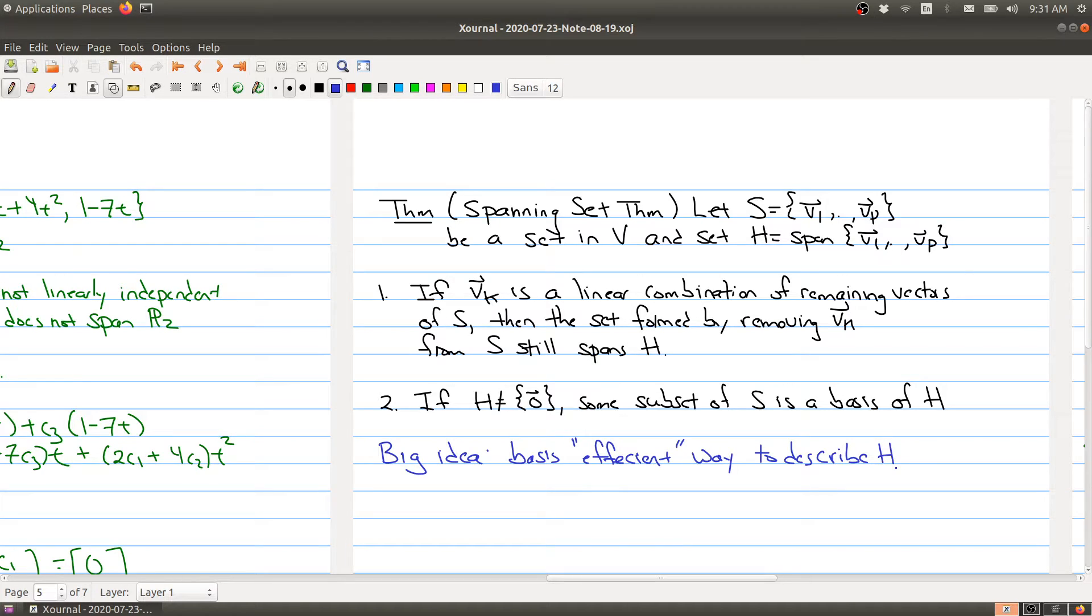It's efficient in the sense that you have a collection of vectors, and you're getting rid of vectors that don't actually give you any information. A basis is the smallest number of vectors needed to span H. It's the smallest number of vectors you need to describe everything inside H.